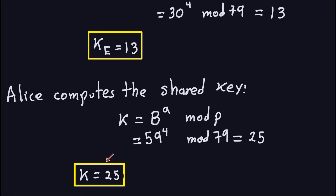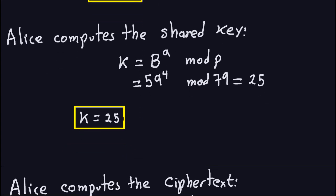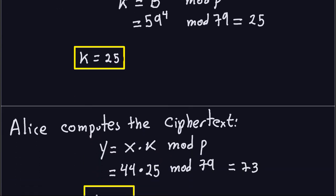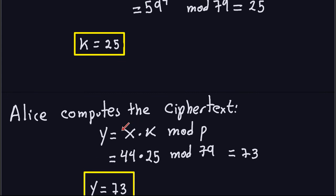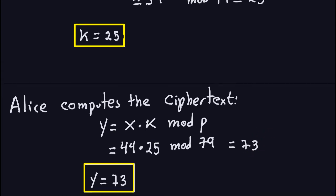Once we have these two things, Alice is almost done. The only thing left is to compute the ciphertext using the shared key. She multiplies the plaintext by the shared key modulo P. The plaintext is 44, K is 25, modulo 79. Doing all this gives 73.